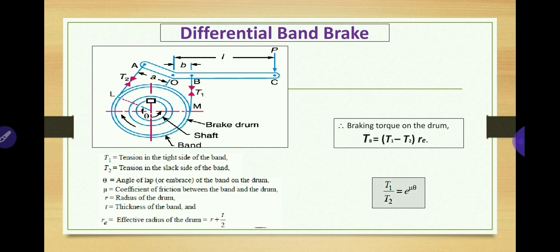The braking torque formula is the same for both simple band brake and differential band brake: Tb equals T1 minus T2 multiplied by Re. Here T1 and T2 are the tensions in the tight side and slack side respectively, and Re is the effective radius of the drum, found from the formula R plus T divided by 2, where R is the drum radius and T is the band thickness.